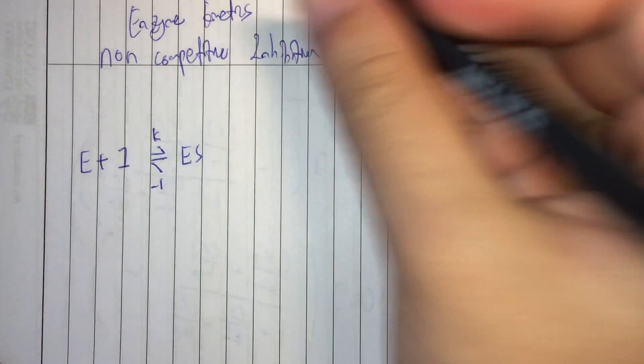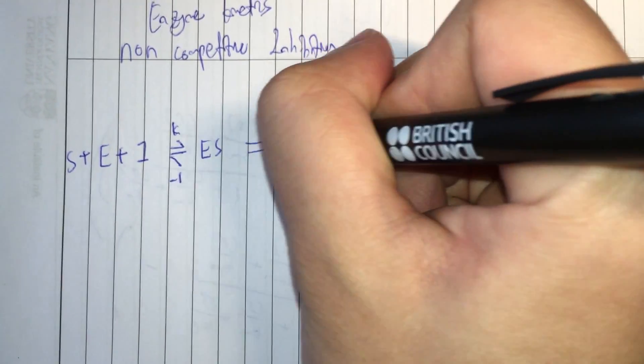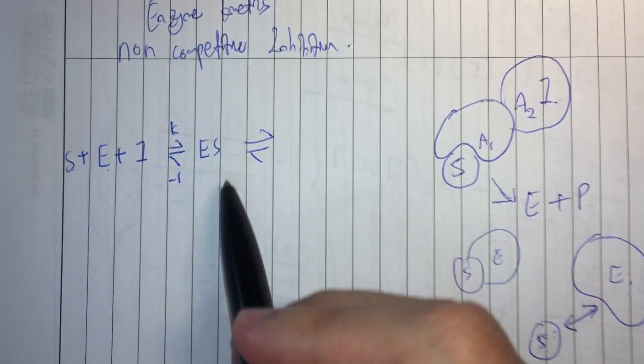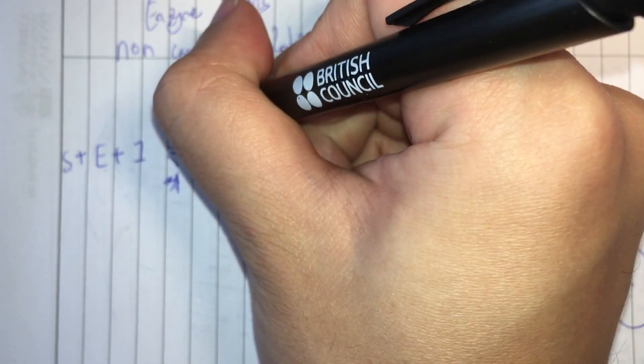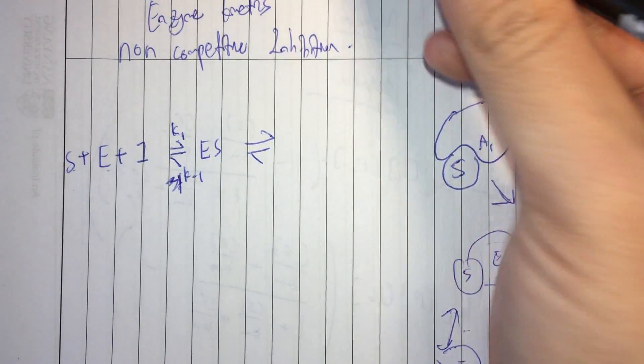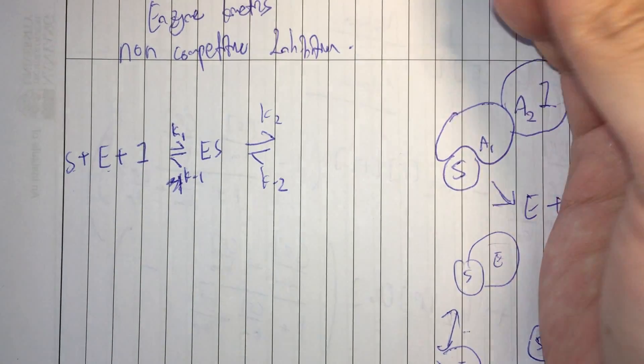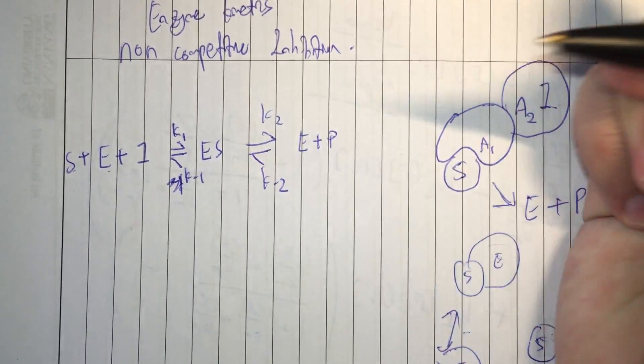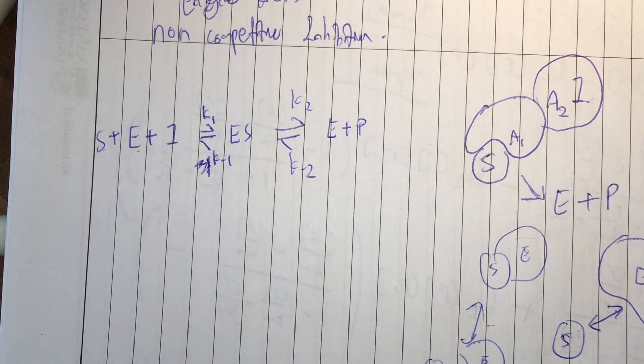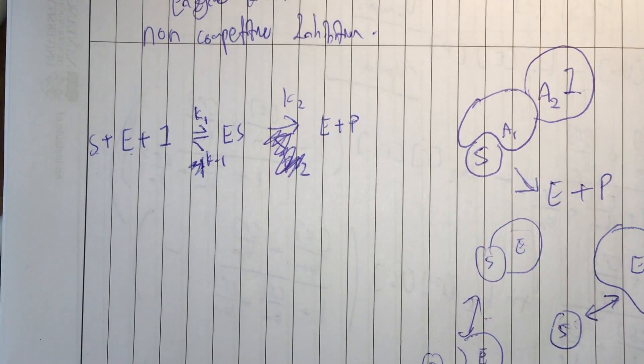So we have E plus S plus I or S plus E plus I becoming ES. So this is just these two species reacting. This is K1, K minus 1. And this is K2, K minus 2. And then you have this E plus P. These are the standard. We shall assume for simplicity there's no backward reaction. The backward reaction can be neglected.